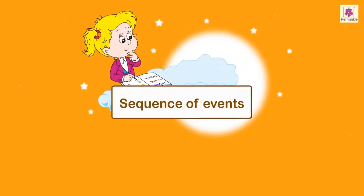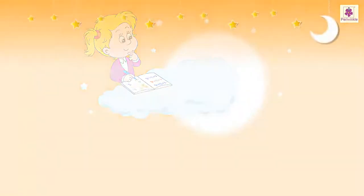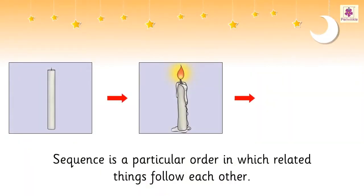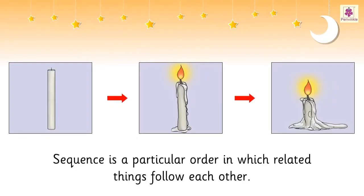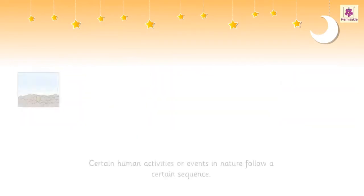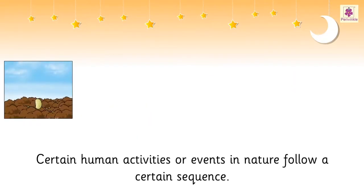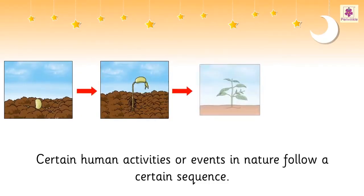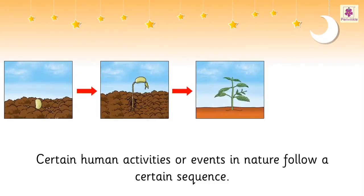Sequence of events. Sequence is a particular order in which related things follow each other. Certain human activities or events in nature follow a certain sequence.